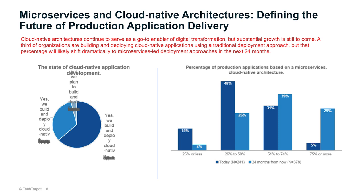What's interesting is not just today, but what we're seeing in the next two years of growth. Looking at the percentage of production applications on microservices and cloud native architectures, 46% of organizations today are running 26 to 50% of their production applications on microservices. In contrast, over the next two years, 39% indicate they'll be running 51 to 74%, and 29% are going to be running 75% or more of their applications on microservices architecture. Really exciting times — it's a new world, a new technology stack.